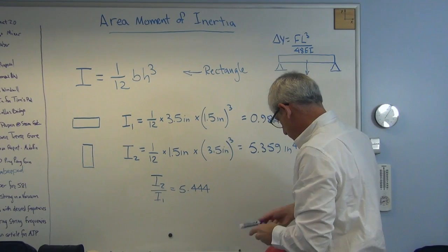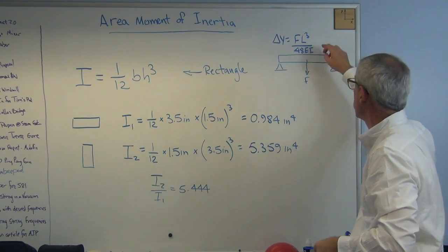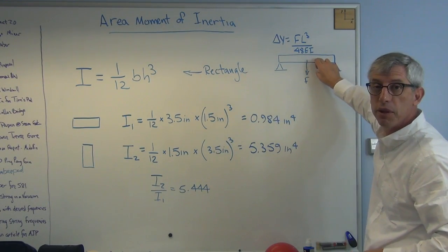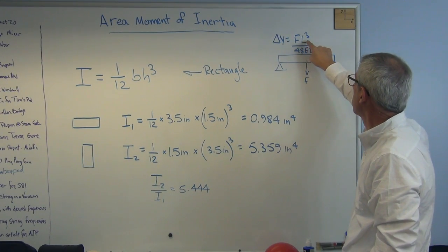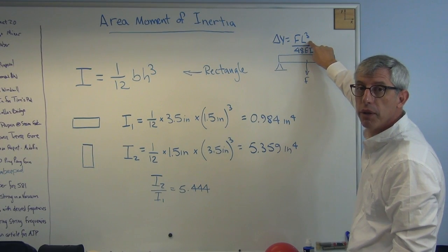That is FL cubed over 48EI. And that comes from solving the differential equation that describes the deflection of a beam. That'd be another video, I suppose. Force, length cubed. So geometry makes a big difference.